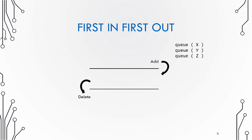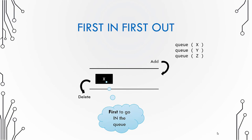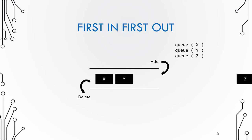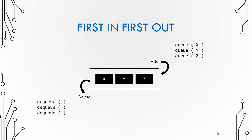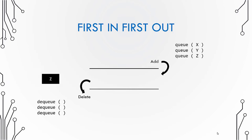Let us queue in three numbers x, y, and z. When we enqueue x it is the first number to go inside. Then y and z are added. When we dequeue, x comes out first because elements are always deleted from the front and added to the back. Naturally the first one to go in is the first one to come out.